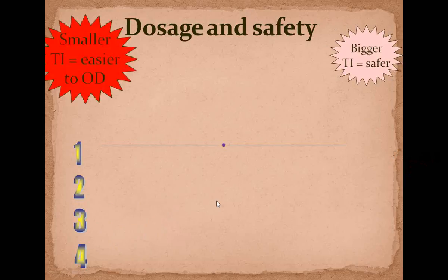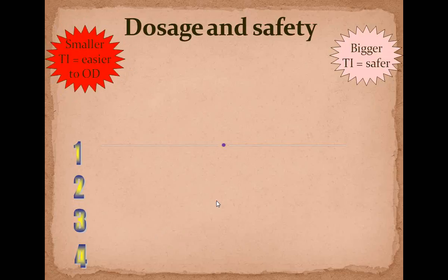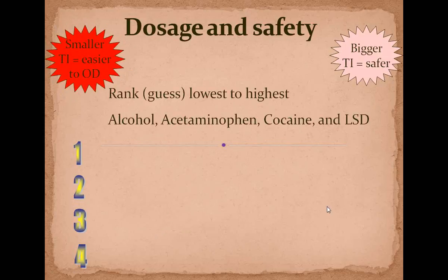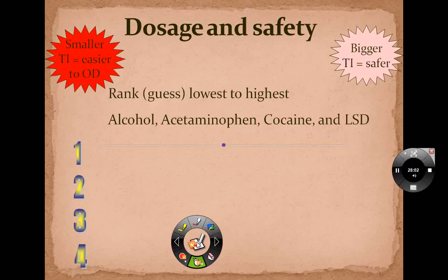The bigger the therapeutic index, the safer; the smaller the TI, the easier to overdose. Ranked from lowest to highest TI — most to least dangerous — guess now: alcohol, acetaminophen, codeine, and LSD. Rank those from most to least dangerous on a piece of paper.